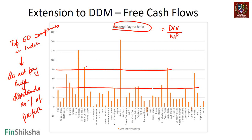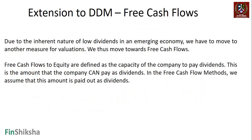HUL is high, Coal India is high, Hindustan Zinc is high — though abnormally high probably because profits were lower this year — and Nestle India is high. So there is a certain set of companies which are high; the rest are pretty low in dividend payout. It's important that we derive an extension to the dividend discount model, because we can't use it when companies are not really paying dividends.